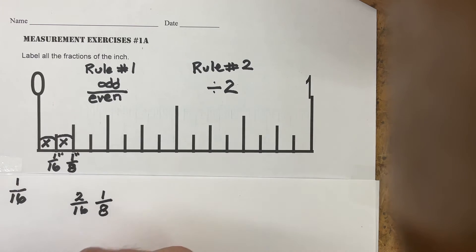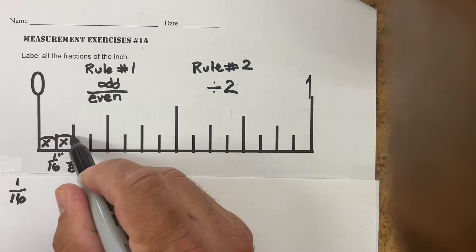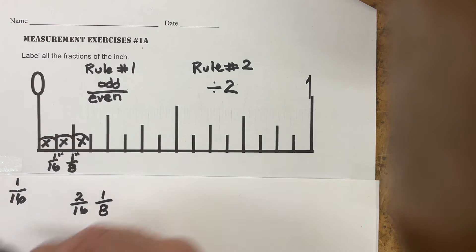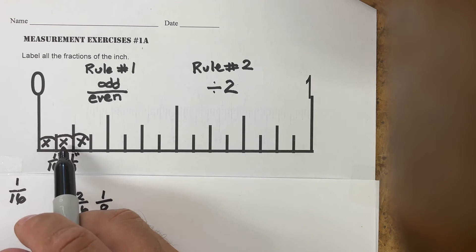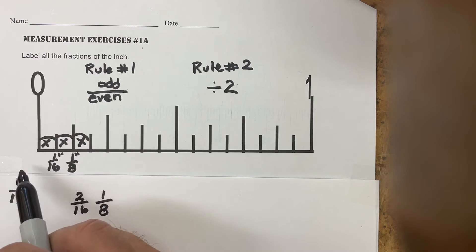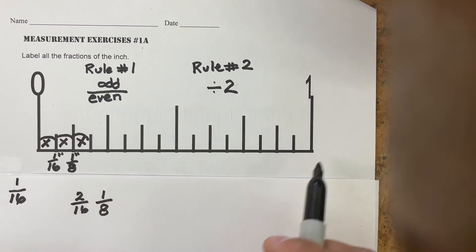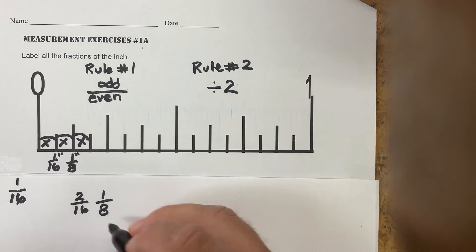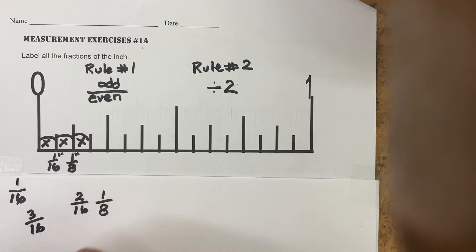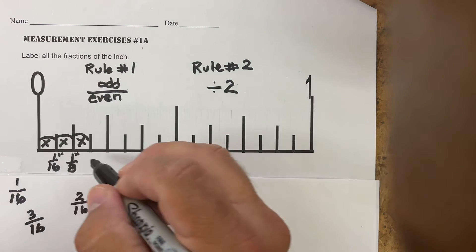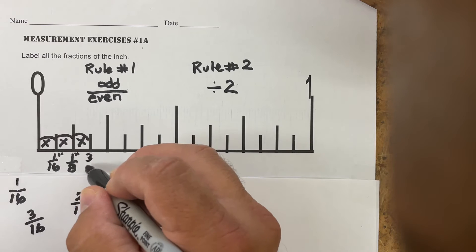Now let's go to the next one. How many sections have I counted? One, two, three — out of a possible 16. So I'll write that down: three out of a possible 16. Is that odd over even? Yes it is, so that's my final answer: three-sixteenths of an inch.